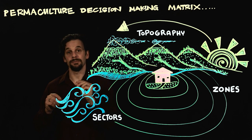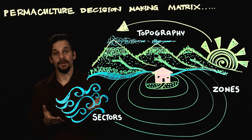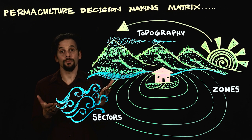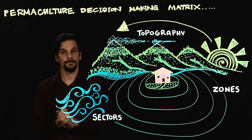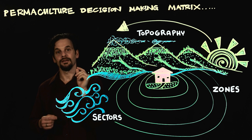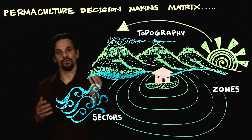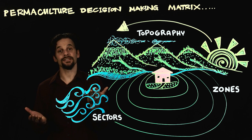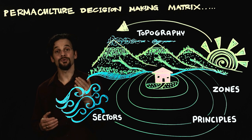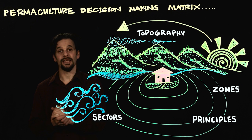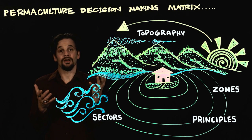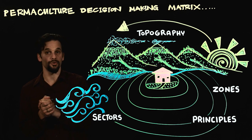Every element has reasons to be placed in one spot or another and the decision-making matrix helps you make that choice. Then the different elements of your system relate to each other and this is where the permaculture design principles really come in. The principles guide design decisions and give us a theoretical backbone for the design and interconnection of the pieces of our life support system.